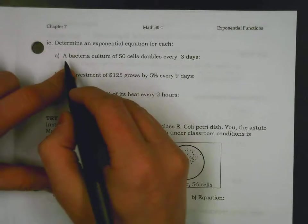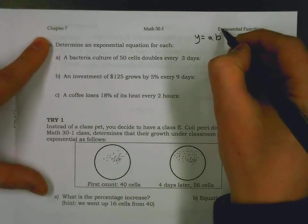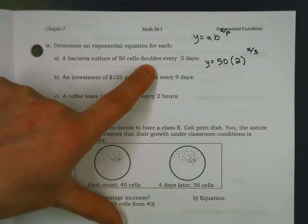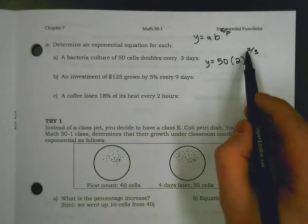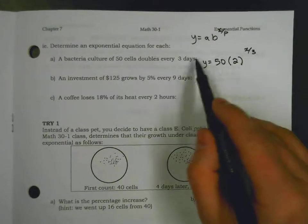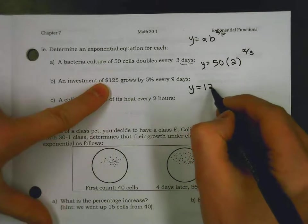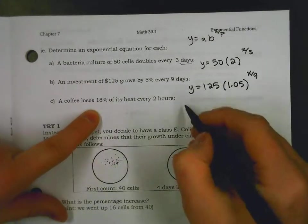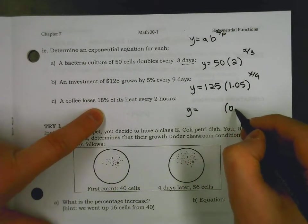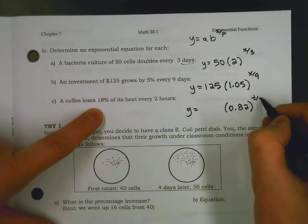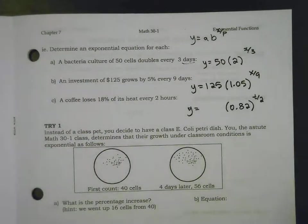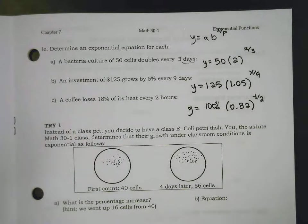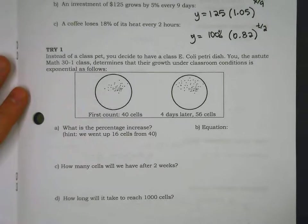So if we were to talk about a bacteria culture of 50 cells doubling every 3 days, we can talk about starting value A, doubling every 3 days. And if you wanted to plug in some value into here, if you wanted to say 2 weeks, you'd have to say 14 as your x value, because this is days. An investment of, starting at $125, grows by 5% every 9 days. X represents days. A coffee loses 18% of its heat every 2 hours. Losing 18%, we're keeping 82% every 2 hours. So T for time, X for input, whatever you want. And what's our starting amount? 100%. And we're losing 18%. It has all of its temperature.